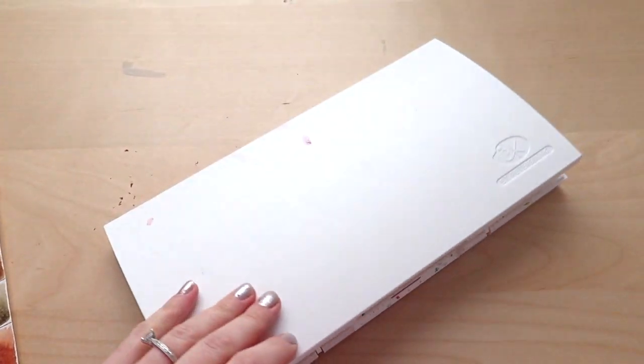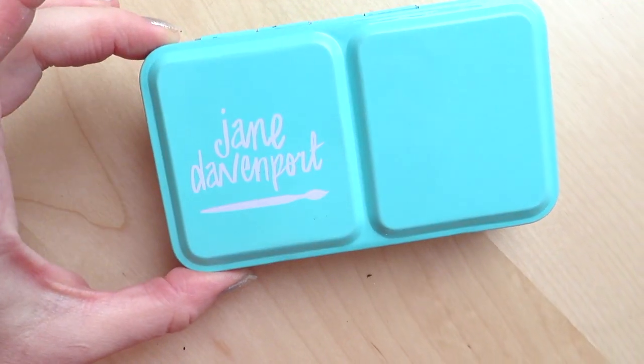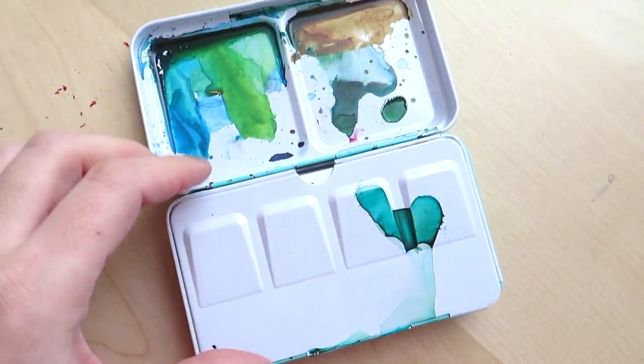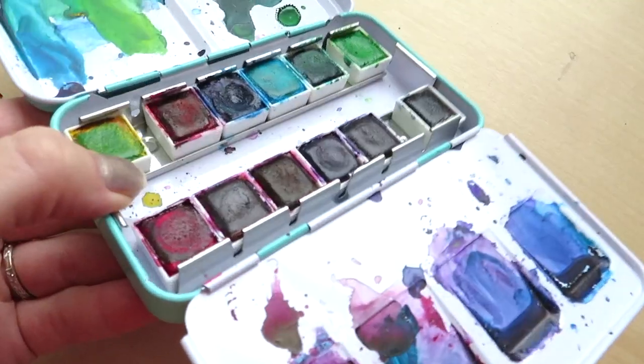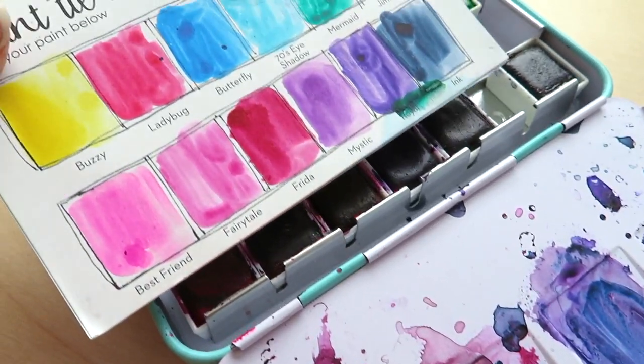Now if you're looking for a smaller pocket-sized set, I recommend these Jane Davenport paints. They won't break the bank and can be found at Michael's. The colors are nice and vibrant and look amazing on paper.